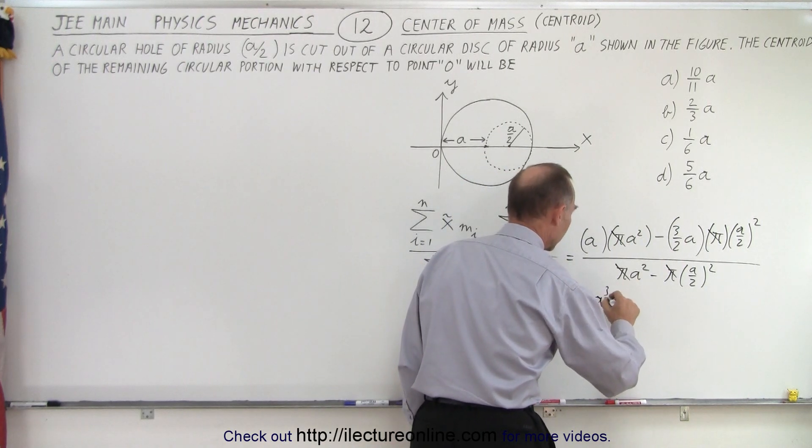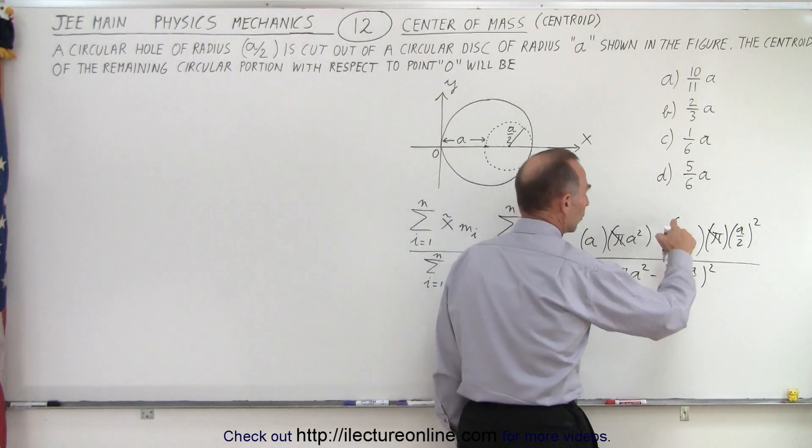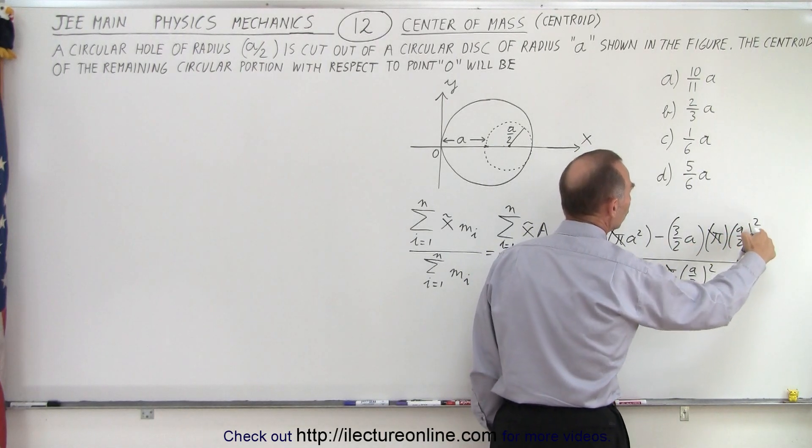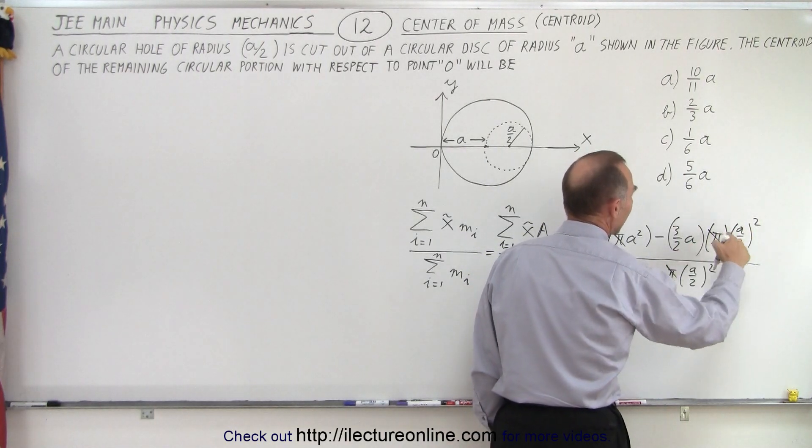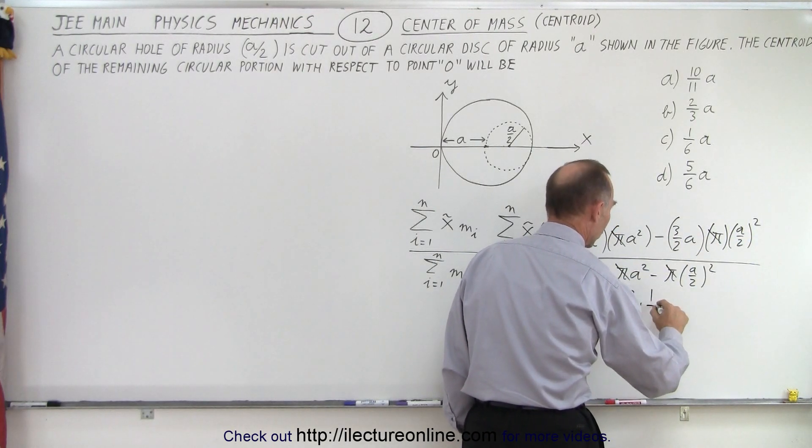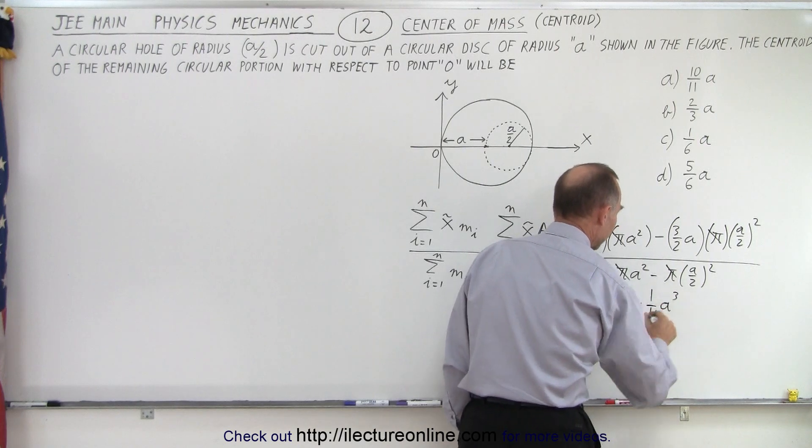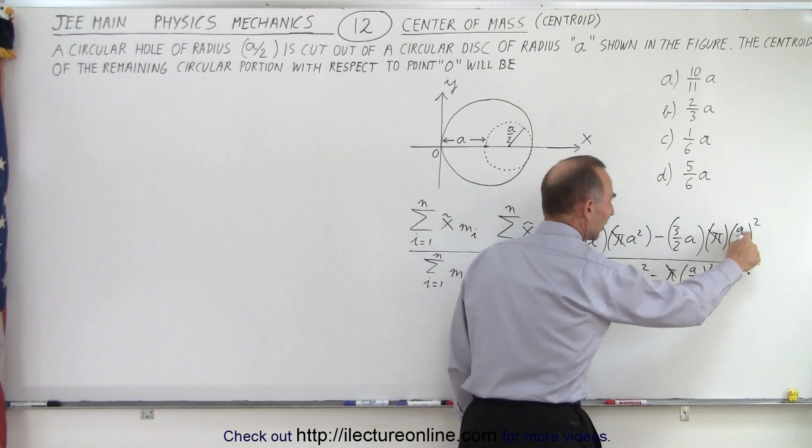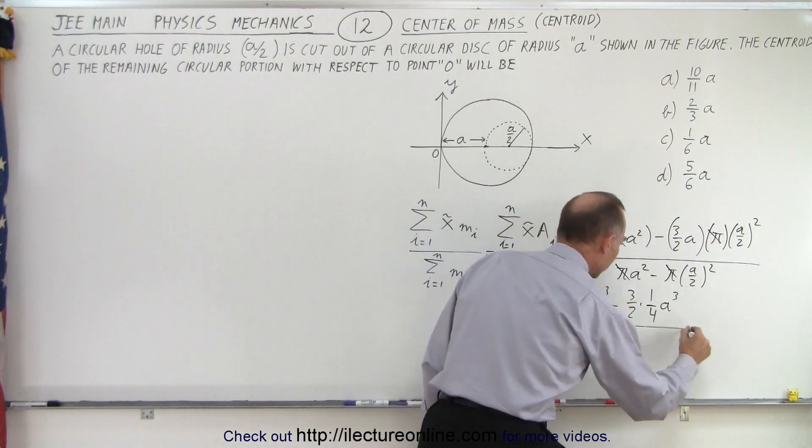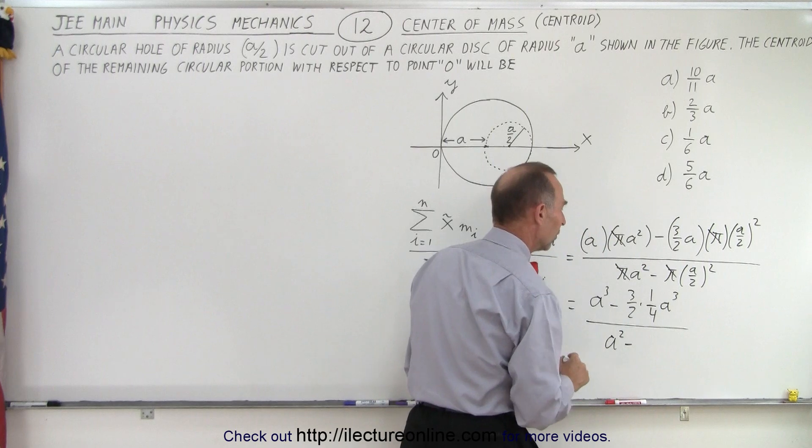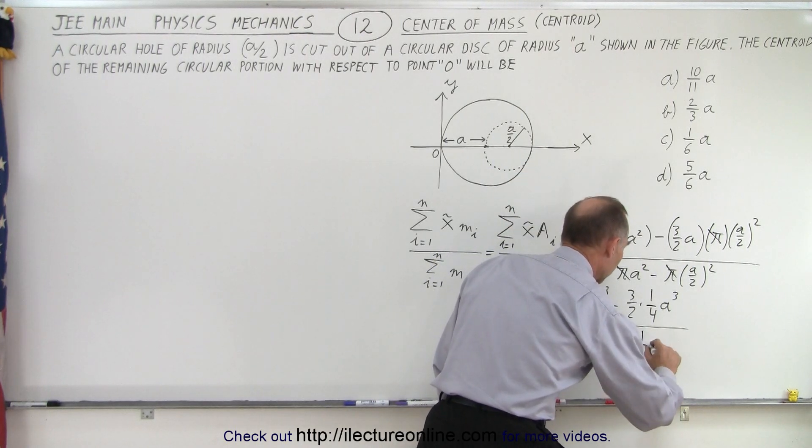So here we have a cubed minus three over two a times a over two squared. So that would be a cubed and three over two times one over four a cubed. So we have three over two times one over four times a times a squared, which is a cubed. In the denominator, we end up with a squared minus one quarter a squared.